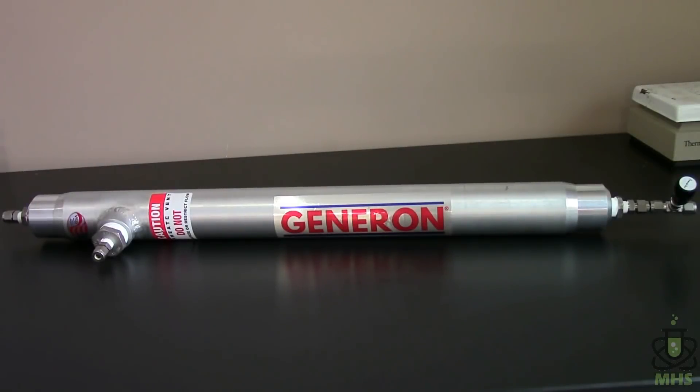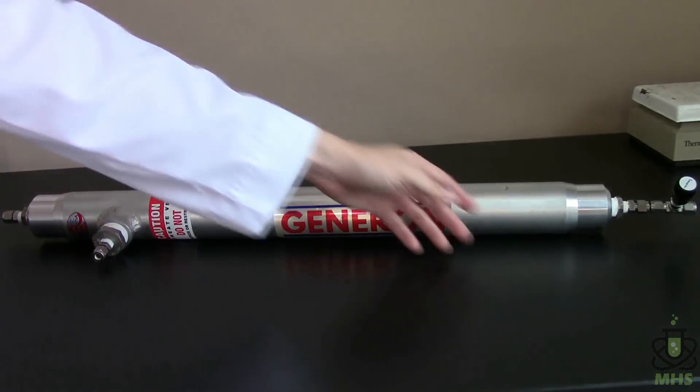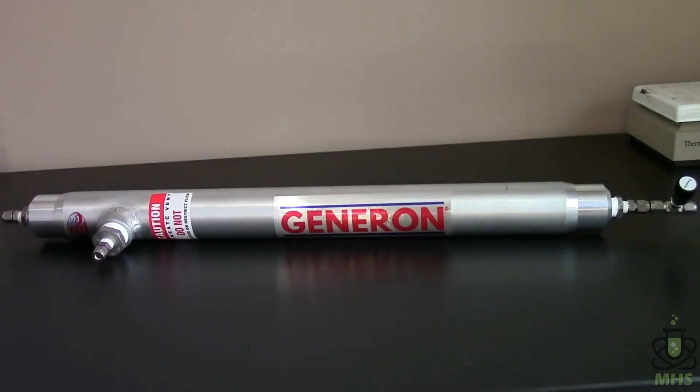Now what I have here is their model 210 module which I believe is the smallest they offer. These can get much larger for use in industrial setups but I got a small one just to test it out. The way it works is very simple. You pass compressed air into this end, the inlet, it then passes through the filter module and purified nitrogen exits out the other end. The oxygen that got filtered off then exits out through this side port here.